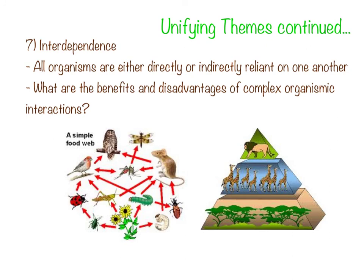Unifying theme number seven and the final one is interdependence — understanding how living things interact with each other and how they interact with their non-living surroundings. Many organisms are reliant on each other, either directly or indirectly. The overall health and function of a group of different organisms depends heavily on how they interact with each other. The major area of biology that looks at interdependence is ecology. This food web shows how this owl relies on this mouse for food, this mouse relies on this mosquito, this bird relies on the caterpillar, the grasshopper, and the ladybug.